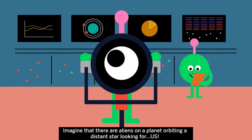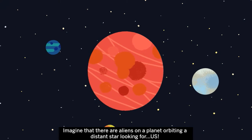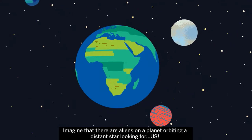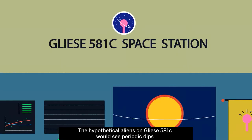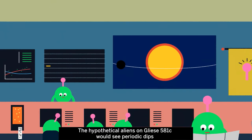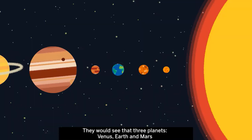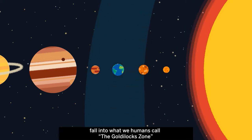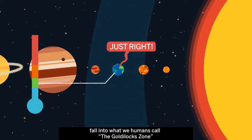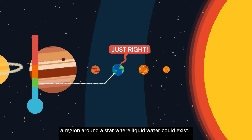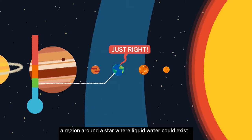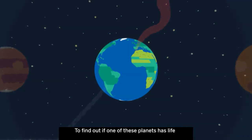But how would we detect its presence? Imagine that there are aliens on a planet orbiting a distant star looking for us. The hypothetical aliens on Gliese 581c would see periodic dips in the sun's light as Earth and other planets passed in front. They would see that three planets – Venus, Earth and Mars – fall into what we humans call the Goldilocks zone, a region around a star where liquid water could exist.